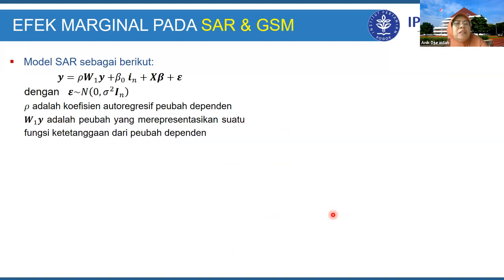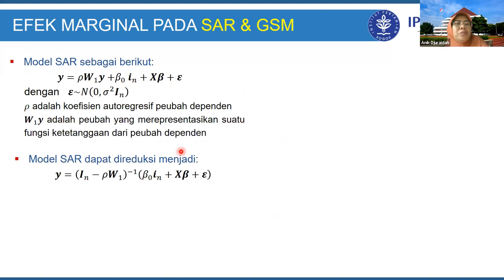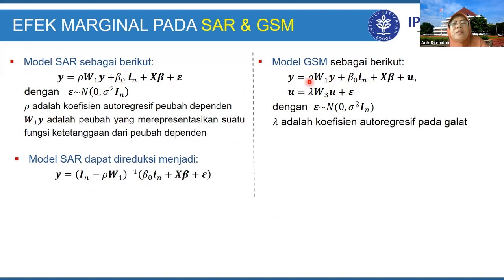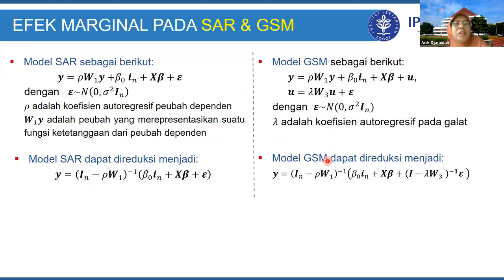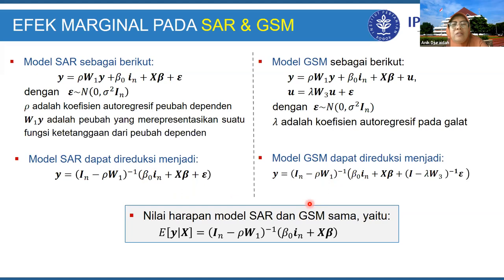Kemudian kita lihat model SAR dan GSM. SAR sudah tahu modelnya, dan SAR bisa direduksi menjadi suatu persamaan. GSM adalah model dengan dependensi di Y dan galat, dan GSM dapat direduksi juga. Nilai harapan dari model SAR dan GSM ini sama, karena komponen galat-nya 0 sehingga bentuknya sama. Jadi nilai harapan SAR dan GSM sama, sehingga punya model limpahan yang sama.